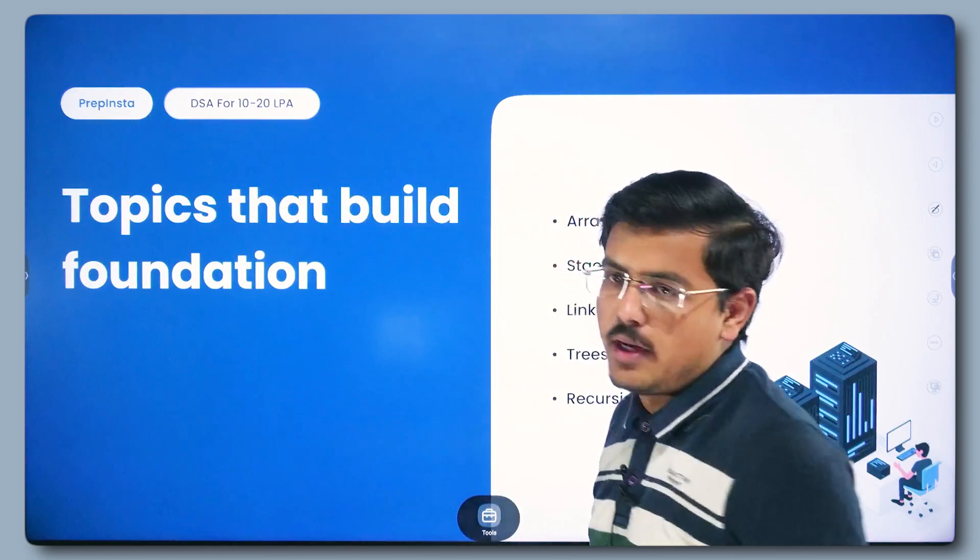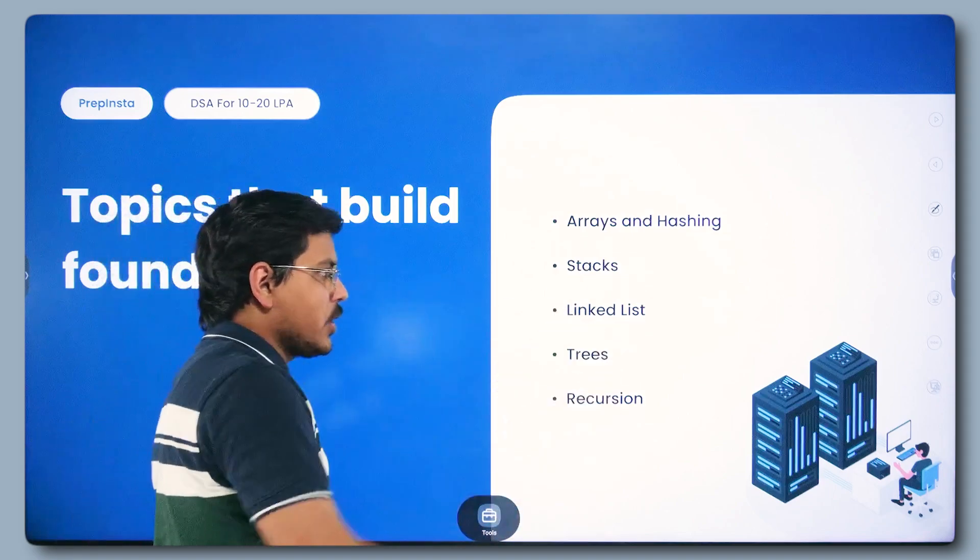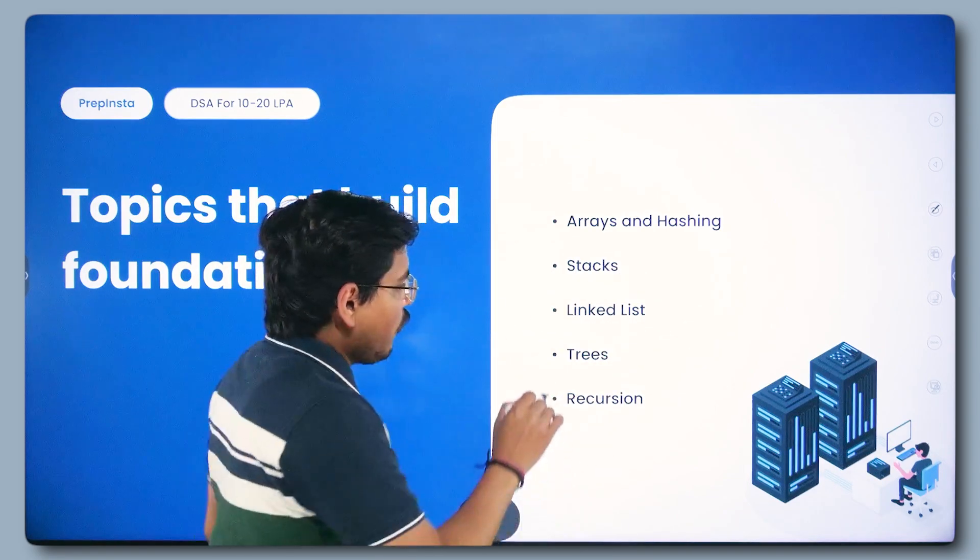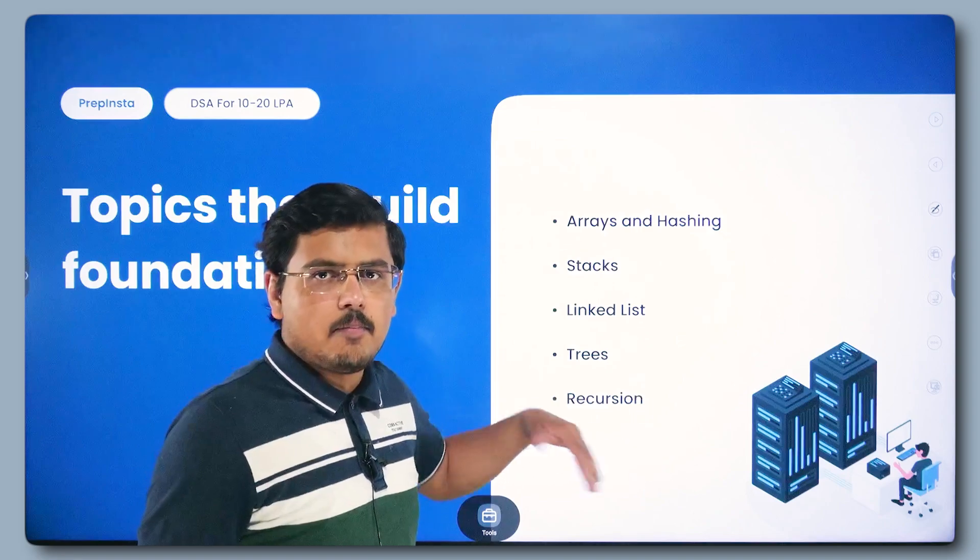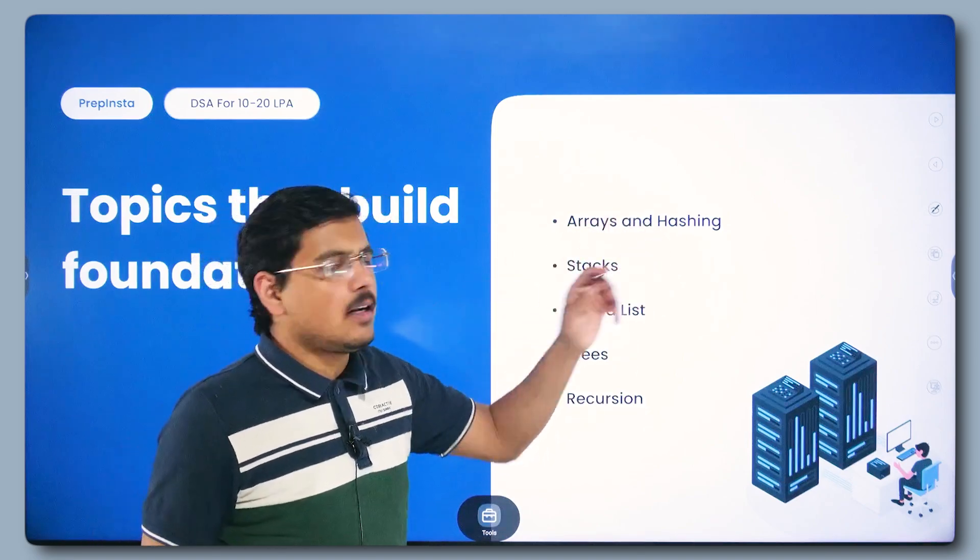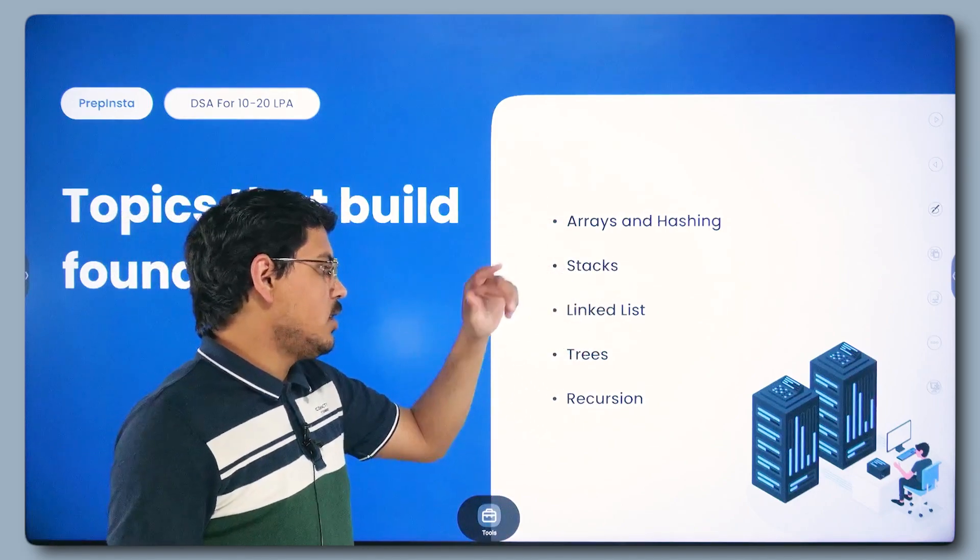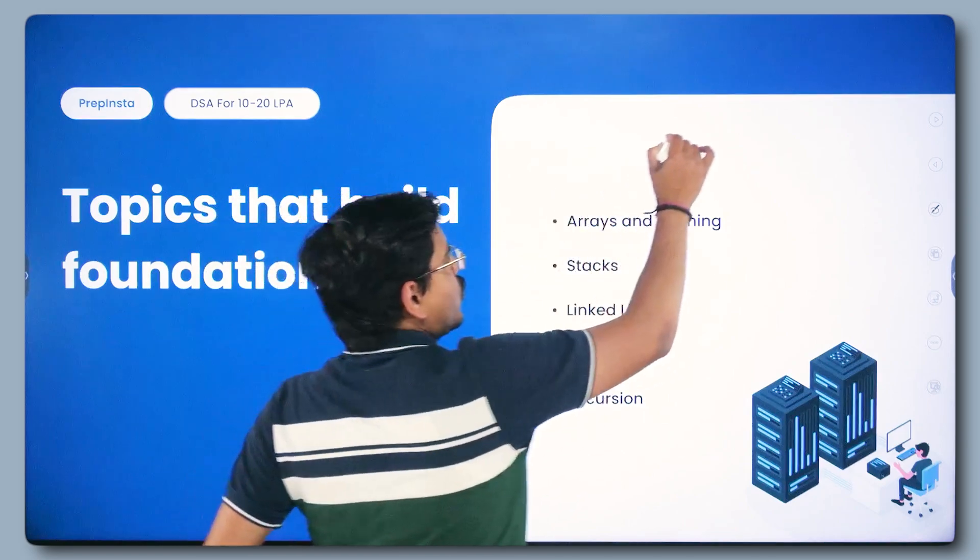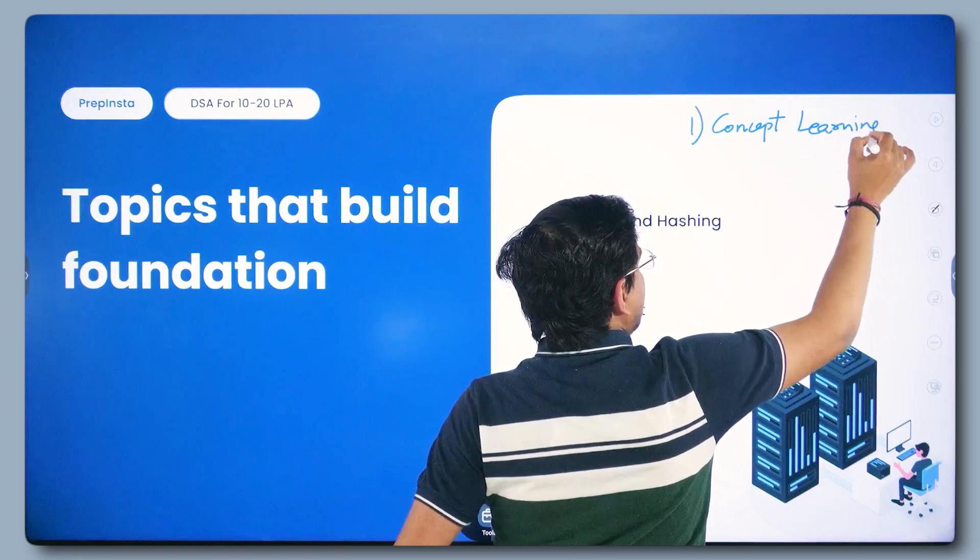So topics that build foundation are these. If you want, take a register, take a pen, start jotting it down. Arrays and hashing you have to cover in this order, then stacks, then linked list, then trees and recursion. I generally prefer doing trees first and then moving to recursion because they are intertwined concepts, but you can change this order according to your convenience. Once you start learning these, first thing you should be very careful about is concept learning.